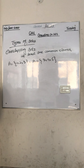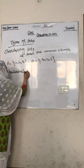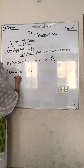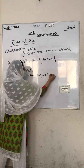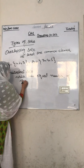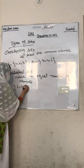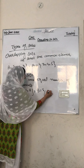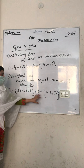Our next type is equivalent set. What is an equivalent set? An equivalent set is a set which has an equal number of elements. For example, A = {2, 4, 6, 8} and B = {1, 3, 5, 7}. This is an equivalent set because the number of elements is the same in both sets. Clear?